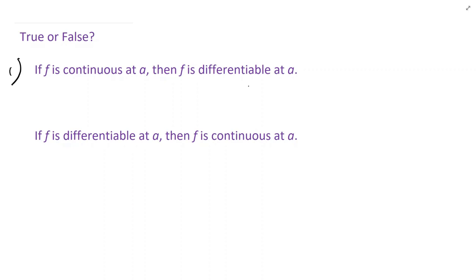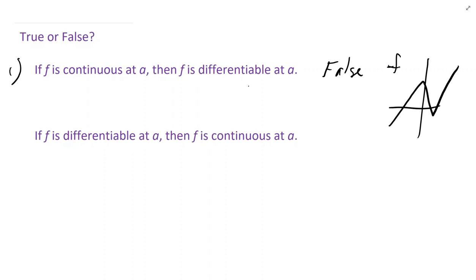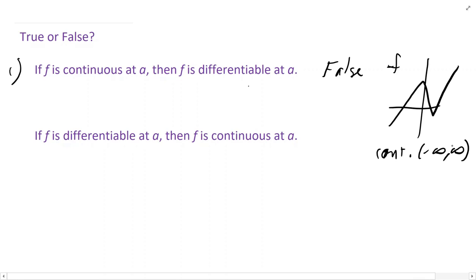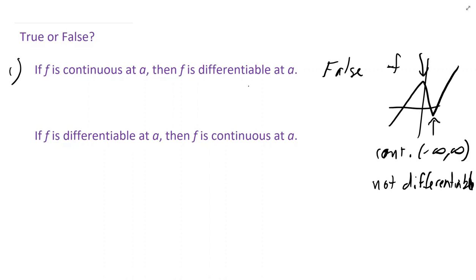Statement one: if f is continuous at a, does that automatically mean f is differentiable at a? The answer is no — this statement is false. Functions can be continuous but not differentiable. For example, a function like our original f is continuous everywhere — no holes, jumps, or asymptotes — but it is not differentiable at two points where there are corners. Continuity does not necessarily mean differentiability.